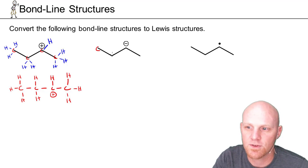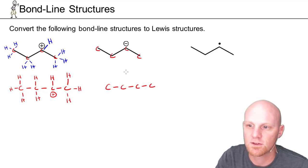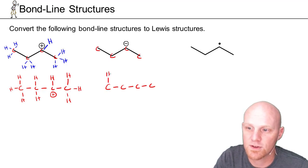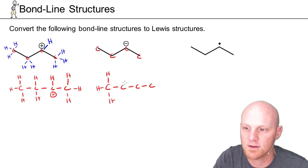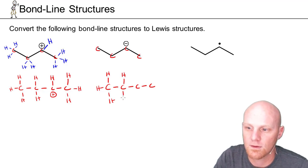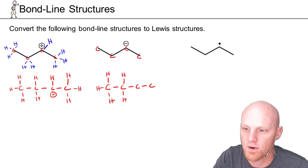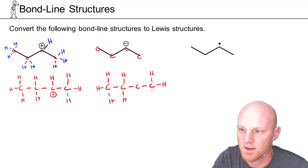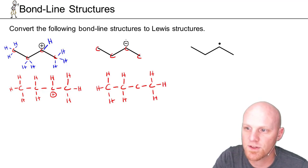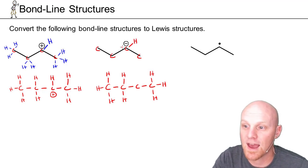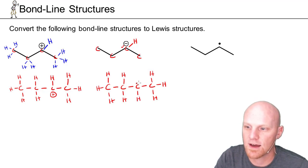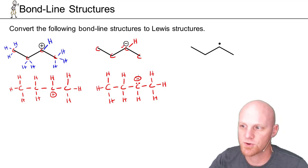On the next one, we again have a four-carbon straight chain. Most of this molecule looks like the one we just did. The far right carbon has three hydrogens. The big difference is the carbon with the negative formal charge — we recall that a carbanion has only three bonds and a lone pair of electrons. So this carbon gets one hydrogen, one lone pair of electrons, and a negative formal charge. There's your proper Lewis structure.